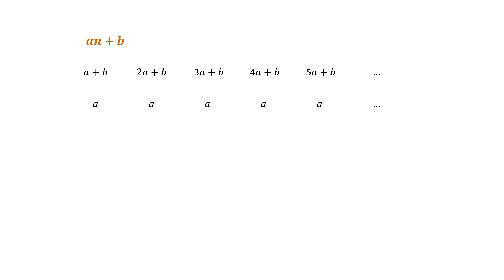Here is an example: 2n plus 3 is the formula. This is the sequence you get when you change n from 1 to 2 to 3 and so on. The difference between each two numbers is 2. One level of calculating the difference gives you a constant sequence.